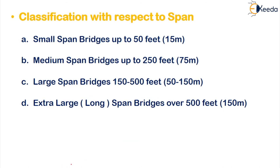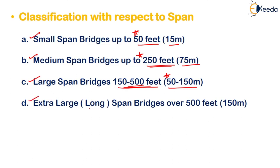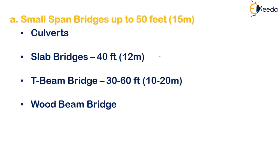The next classification is based on the span — the length of the span. There are four categories. Small span bridges are up to 50 feet or 15 meters. Medium span bridges are up to 250 feet or 75 meters. Large span bridges are 150 to 500 feet or 50 to 150 meters. Examples of small span bridges are culverts, slab bridges of around 40 feet or 12 meters, T-beam bridges of 30 to 60 feet or 10 to 20 meters, and wooden beam bridges.